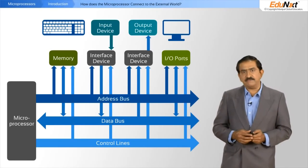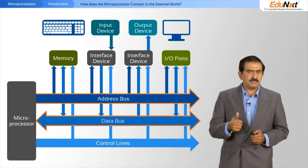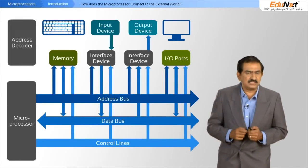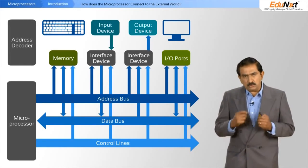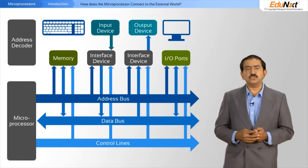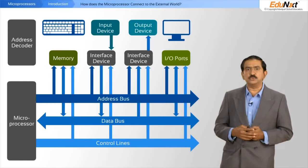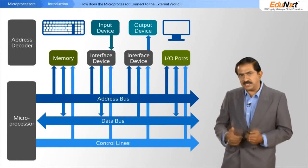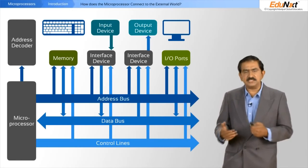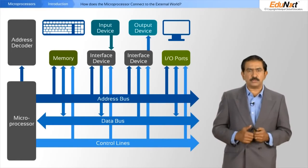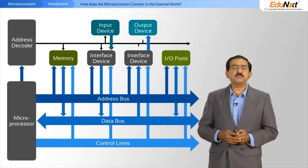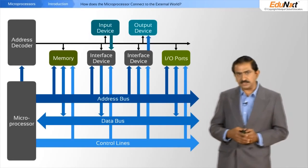This in itself is not enough. While you have the address bus and data bus connected, you also need something called an address decoder. How does the processor know whether it is talking to the keyboard or the display? The address decoder takes address lines, read signals, and write signals from the processor, decodes them, and triggers the appropriate peripheral devices.